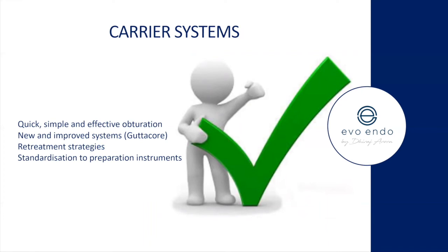Carrier systems: the classic Thermafil has now been transformed into GuttaCore or GuttaFusion, where the carrier in the middle originally used to be plastic or metal-based but now uses a cross-sectional GP kind of design. Advantages of carrier-based systems such as Thermafil: quick, simple, and effective obturation system, standardized to your preparation — Thermafil points are the same taper as what you prepared the canal with.